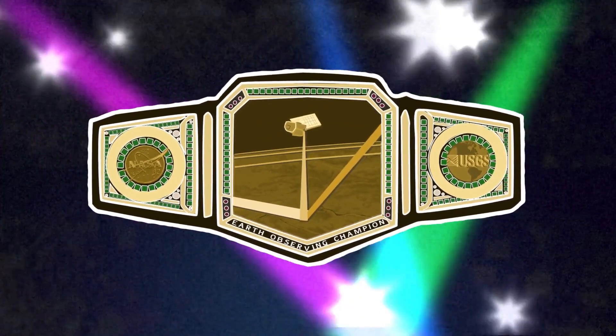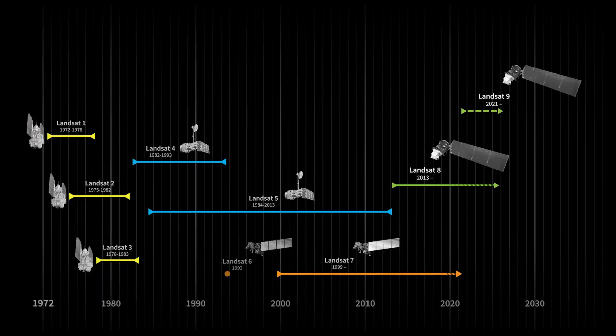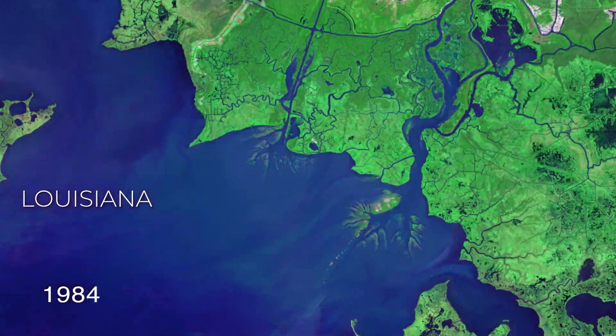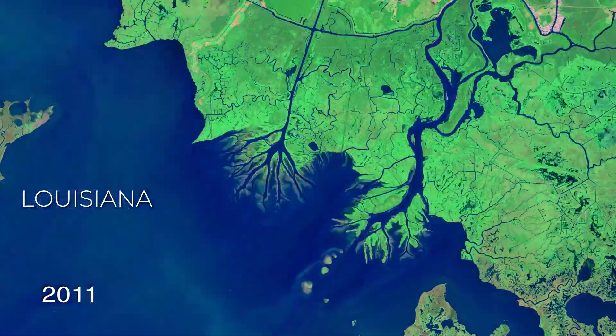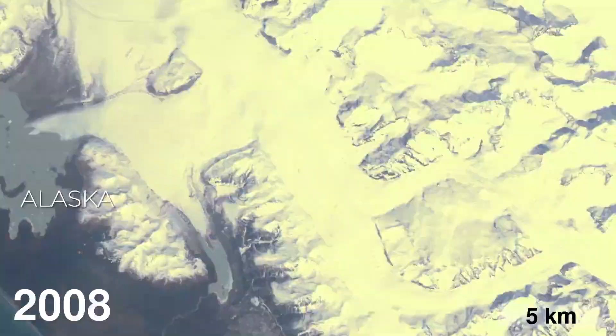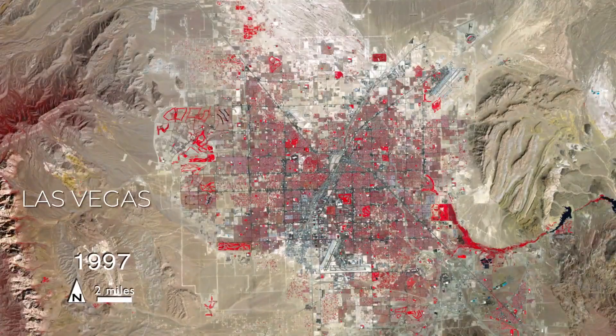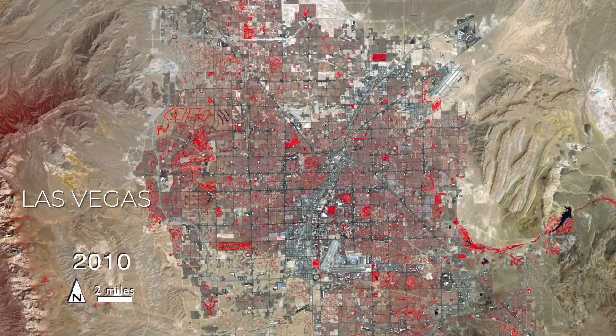Landsat holds the title for the longest continuous space-based record of Earth in existence. That's 50 years of scenes like these, helping scientists and researchers understand how our planet is changing over time.